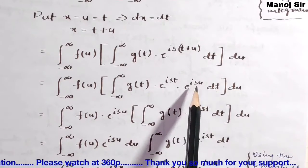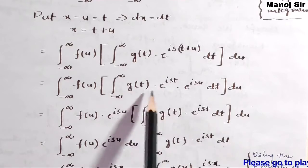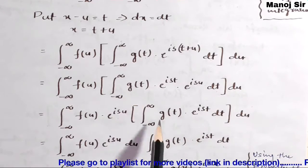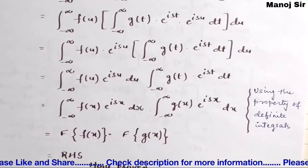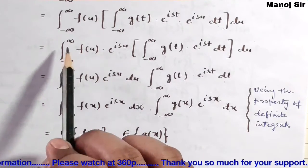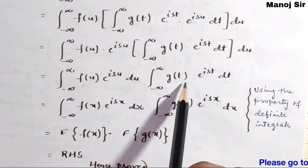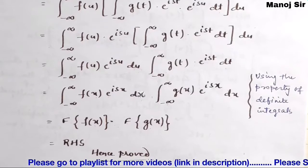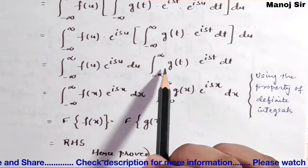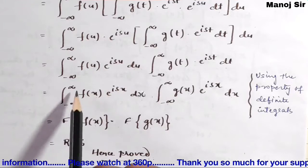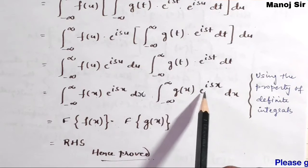Since e to the power isu is independent of t, we can take it out: integration from minus infinity to plus infinity of f(u) into e to the power isu du, multiplied by integration from minus infinity to plus infinity of g(t) into e to the power ist dt. Using the property of definite integrals, we change the variable u to x in the first integral and t to x in the second integral, giving: integration of f(x) e to the power isx dx, times integration of g(x) e to the power isx dx.